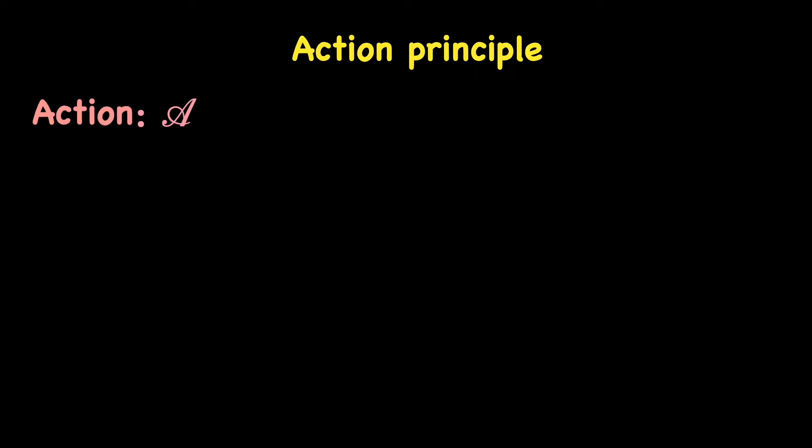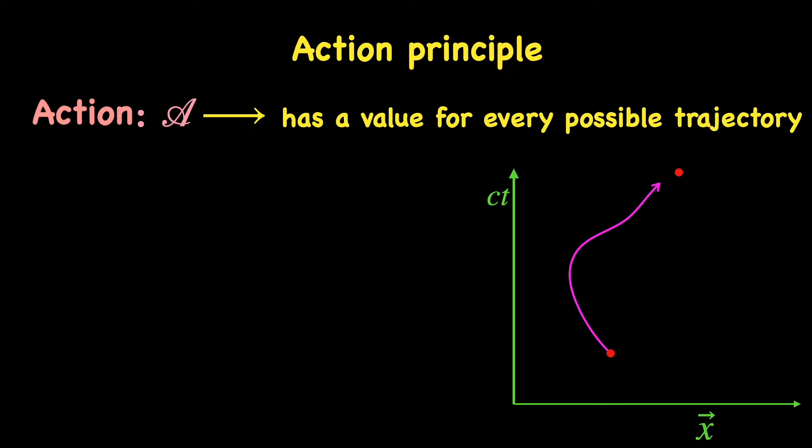For any particle there is a quantity called its action. The value of this action can be calculated for any possible trajectory of our choice between a given pair of initial and final location of the particle. Notice that I said any possible trajectory of our choice, not the specific trajectory that the particle is actually going to follow.